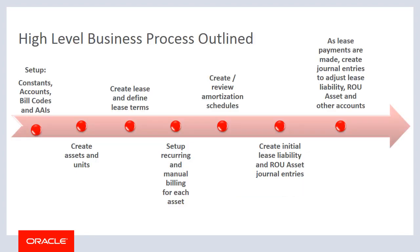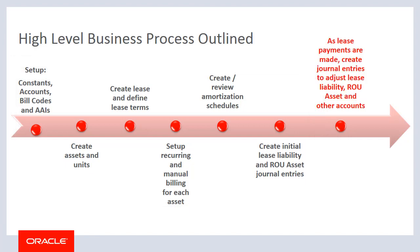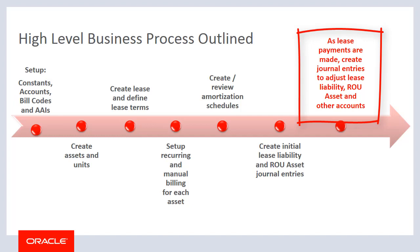As mentioned, the previous videos discuss the balance sheet lessee accounting process up through lease commencement, which includes the creation of initial lease liability and ROU asset journal entries. In this video, we will discuss how your ongoing lease payments impact your leased assets and how to run monthly processes to create lease liability and ROU asset journal entries, ensuring that your financial statements are up to date for your leased assets.